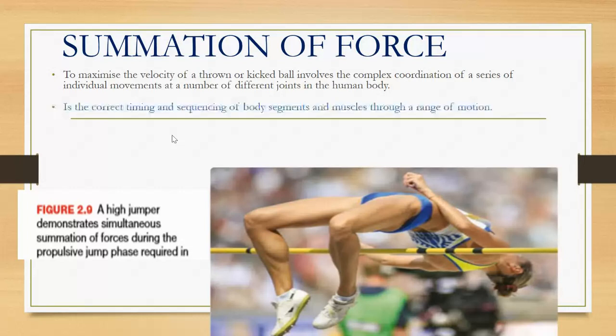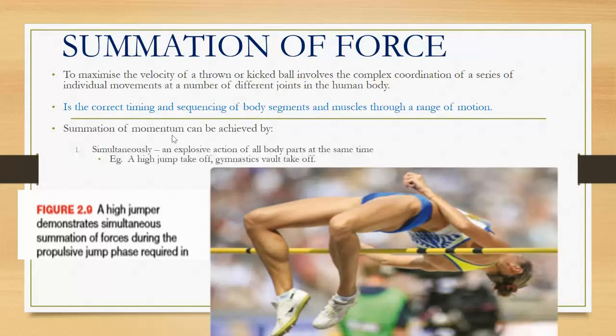But there's two ways in which you can do that. It's all about the correct timing and sequencing of body segments and muscles through a range of motion. The first way that can be achieved is by simultaneously moving every muscle or joint at the same time. Think of this picture that demonstrates a high jump takeoff, a gymnastics vault takeoff. They propel every part of their body in that direction at the exact same time, simultaneously.